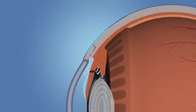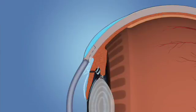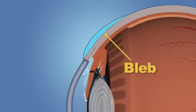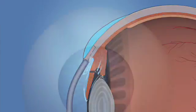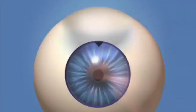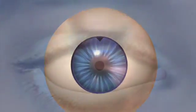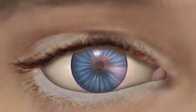The trabeculectomy allows fluid from the eye to flow into a filtering area called a bleb. The bleb is mostly hidden under the eyelid. When successful, this procedure will lower the pressure in your eye, minimizing the risk of vision loss from glaucoma.